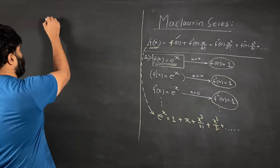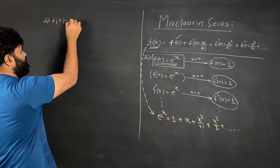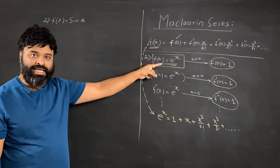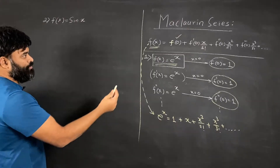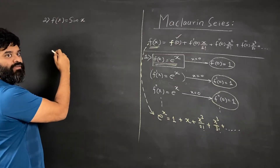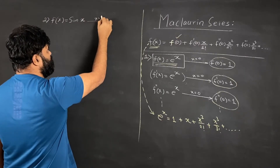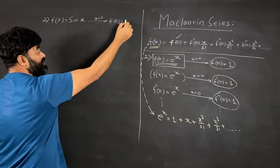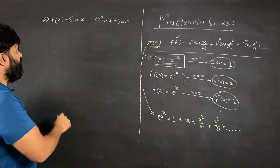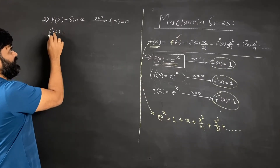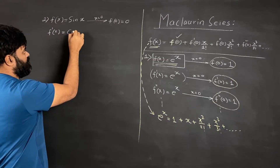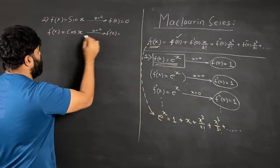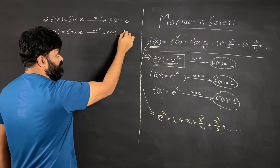Now let's go to a slightly more complicated example. The second function is f of x equal to sin x. We want to find its power series just like we did for e raised to x. Putting x equal to 0, f of 0 equals sin 0, which is 0. Differentiating, f dash of x is cos x, and putting x equal to 0 gives f dash of 0 equals cos 0 equals 1.